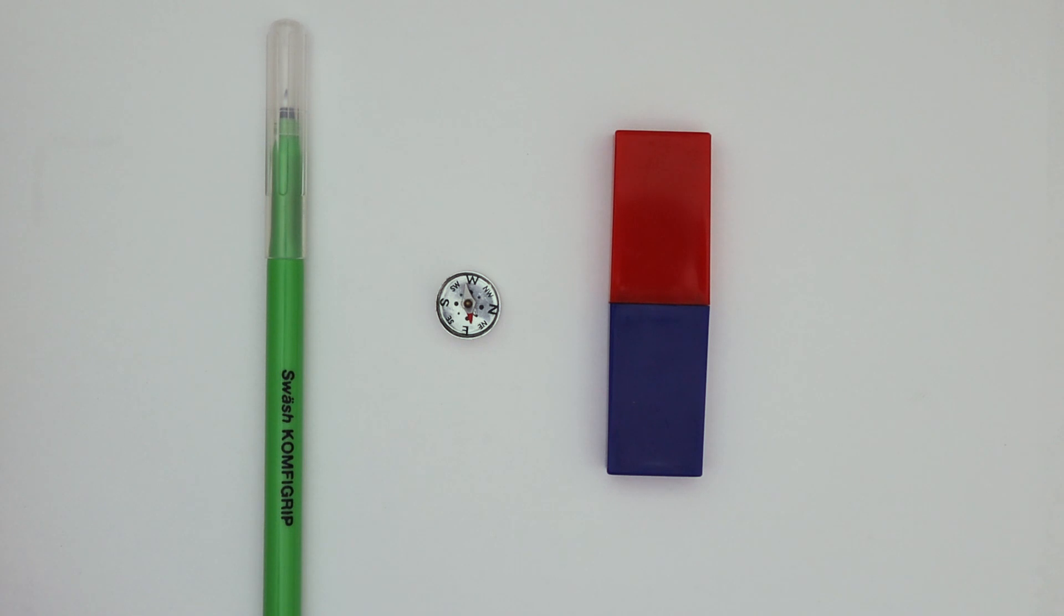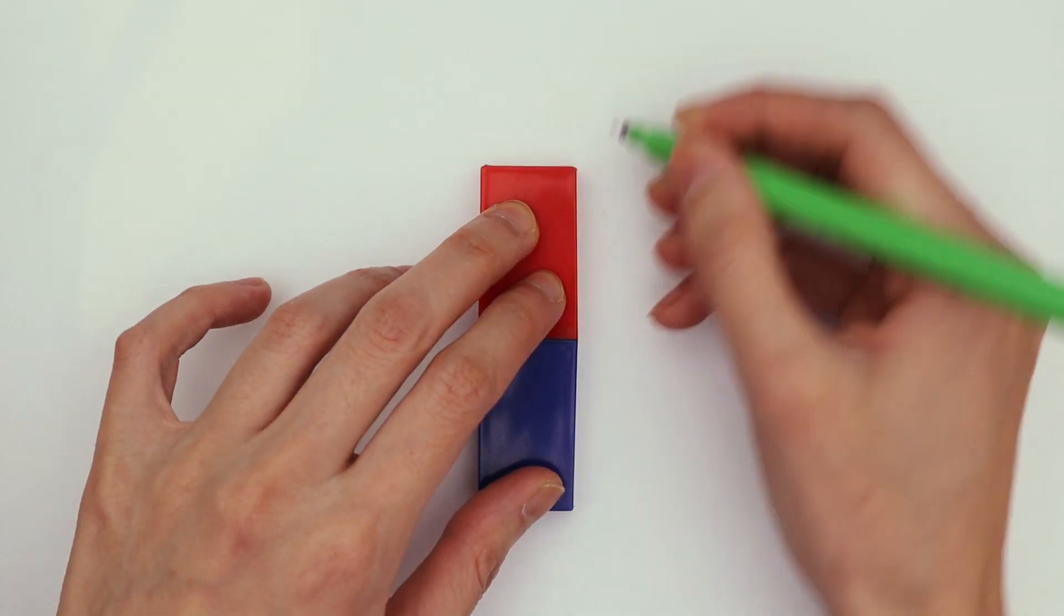My magnet doesn't tell me which is the north pole and which is the south, but we'll find out soon. Place your magnet in the middle of the page and trace around it.